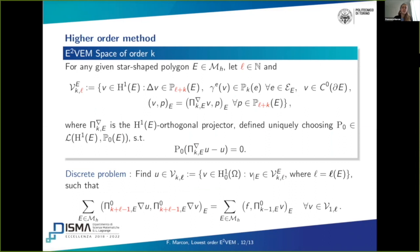Then finally, I want to present briefly my current work about the VEM space of order k, where k is greater than one. We see that, as before, we have to change the space in order to enable the computation of higher-order projection. In this case, we compute the projection of order k plus L minus one, in order to have the robustness of the problem. And so, we change the local VEM space in order to make this computable.